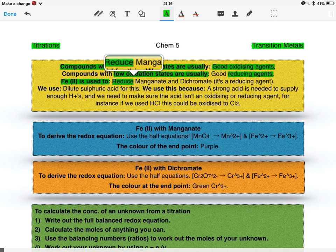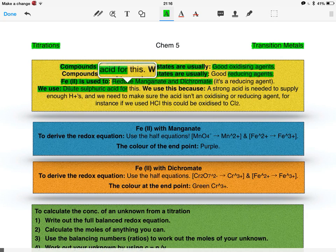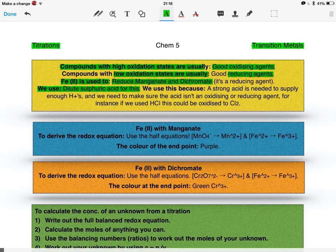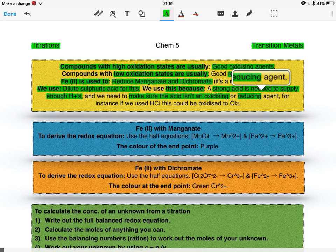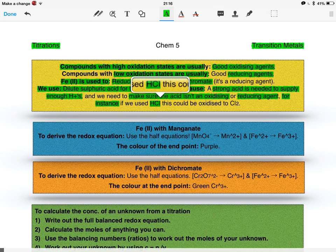What it can do, is it reduces manganate and dichromate. We have to use dilute sulfuric acid for this reduction, and we use this acid because a strong acid is needed to supply sufficient H pluses. However, we need to make sure that the acid isn't an oxidising or reducing agent. For instance, if we used HCl, hydrochloric acid, this could be oxidised into chlorine. This is something we don't want, because it will basically interfere with the titration of what we're trying to find out.